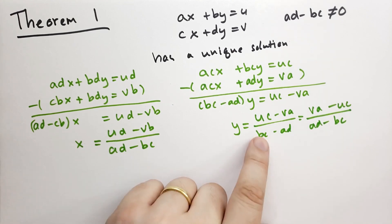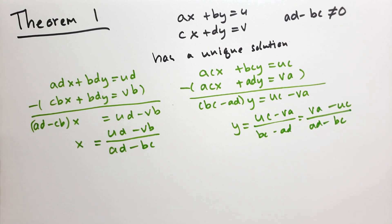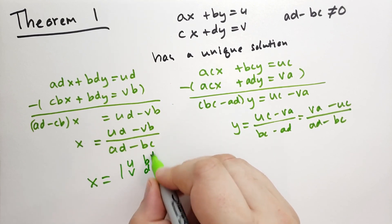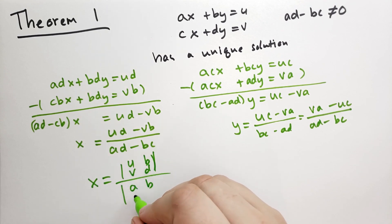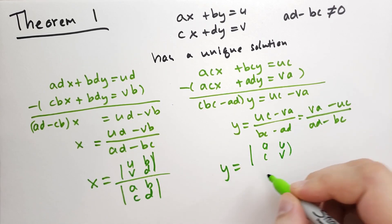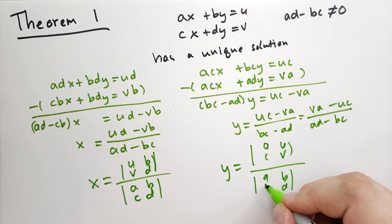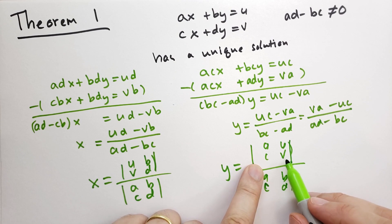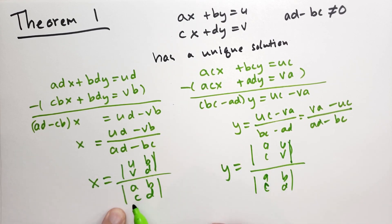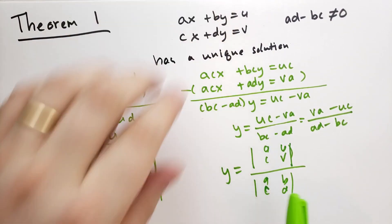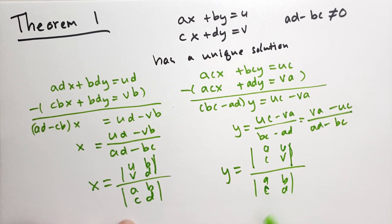He plugs this back into the equations and shows it all checks out. Importantly, the solution for X is the determinant of [U, V; B, D] divided by the determinant of [A, B; C, D]. And the answer for Y is the determinant of [A, C; U, V] all over the determinant of [A, B; C, D]. The UV column vector has replaced one of the columns in the numerator. This will be important when we extend to 3x3 matrices with a similar solution.